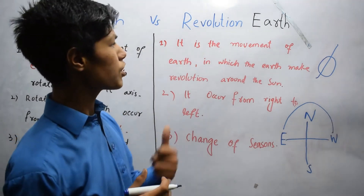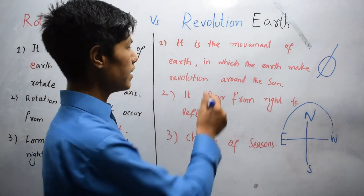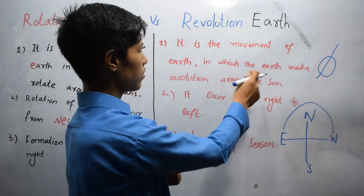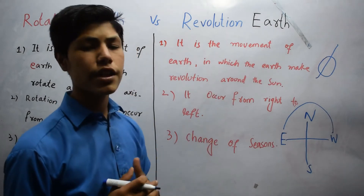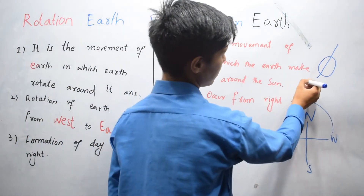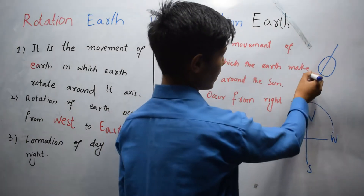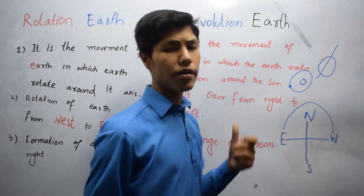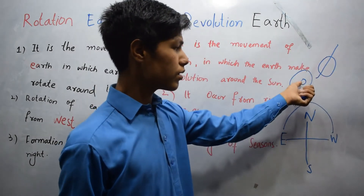Now let's talk about revolution of earth. It is the movement of earth in which the earth makes a revolution around the sun. This is the sun, and this is basically the earth or another planet, and it revolves around the sun.